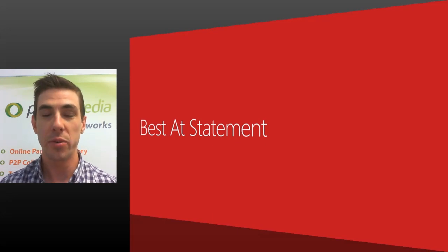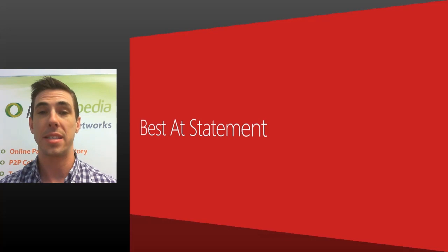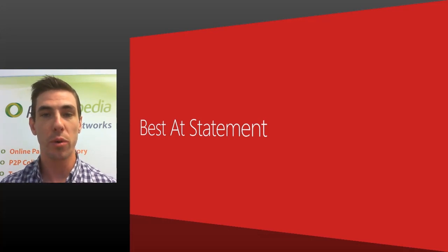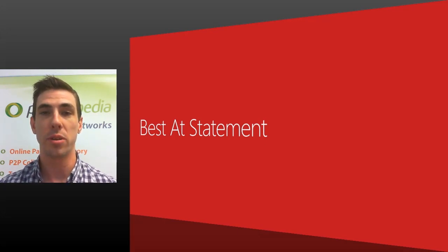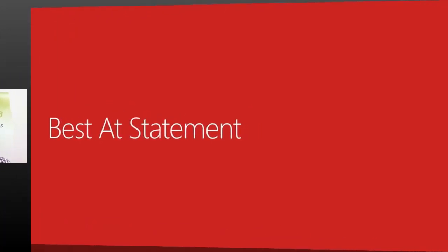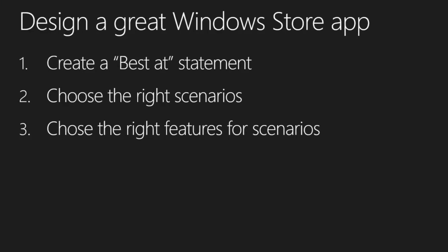Usually the cornerstone of doing the sketching is creating something which we call the best at statement. The best at statement is truly going to be the component of your application that identifies from a high level what your app is going to achieve. In addition to the best at statement, there are two other components that really combine together to create a great sketching scenario. One is the scenarios themselves — components that support your best at statement as far as what your application is going to achieve. In addition to those scenarios, you're also going to want to identify features — specific tasks performed within the application that achieve your scenarios and complete the best at statement.